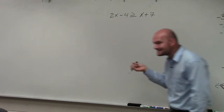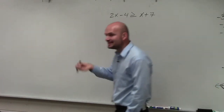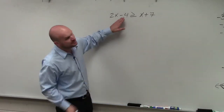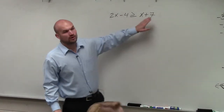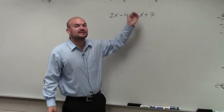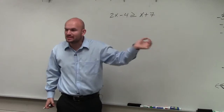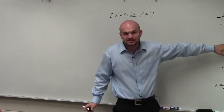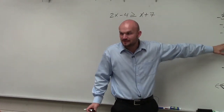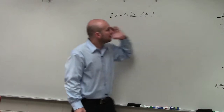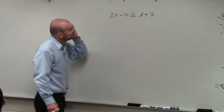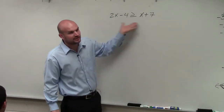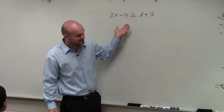So the next step is to get the variable on the same side. Please do not add 4 or subtract 7 — get the variable to the same side. You want to get your variables to the same side. So you could either subtract the 2x or subtract an x to get on the left side or the right side.